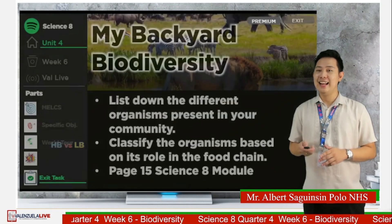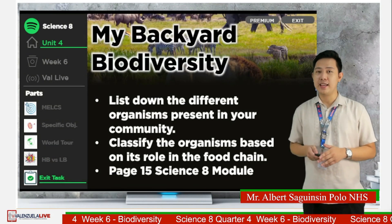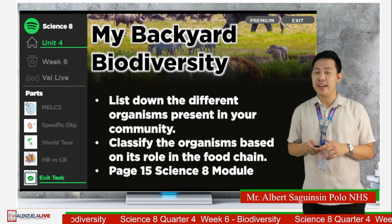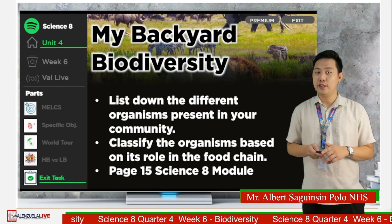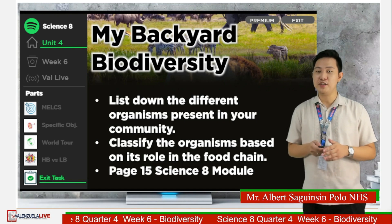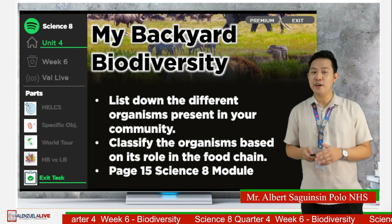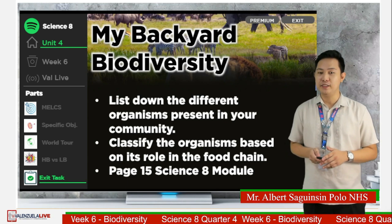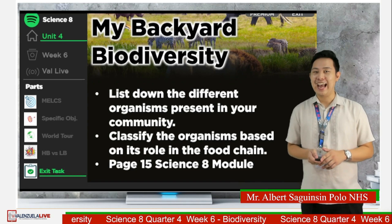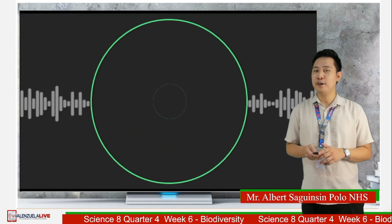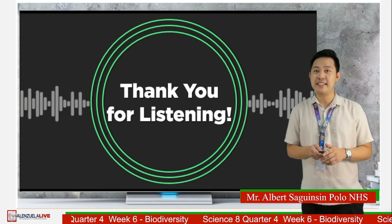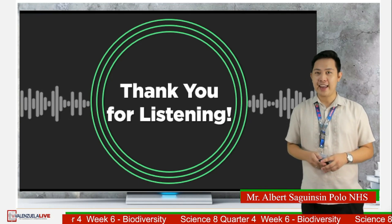For your exit task, list down the different organisms present in your community. Classify the organisms based on their role in the food chain — whether producers, primary consumer, secondary consumer, or tertiary consumer. This can be found on page 15 of your Science 8 module. Do not forget to answer the guide questions. Thank you so much for your participation. See you all next week for another episode of Valenzuela Live Science 8. Stay safe and God bless.